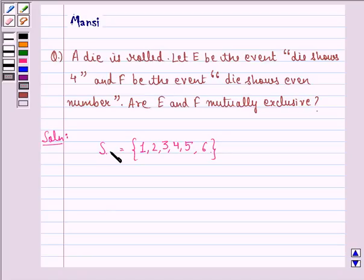Any subset E of a sample space S is called an event. We see that event E is that the die shows 4, so that will be 4. This is an event of getting 4.